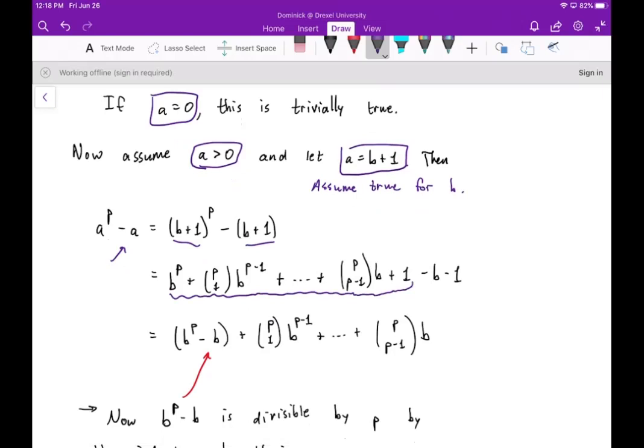And then we just distribute the negative to these two terms, giving us minus B minus one.